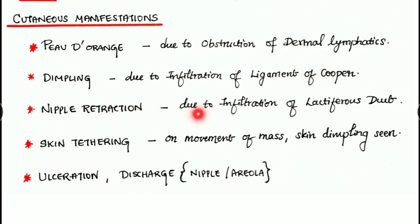Next, nipple retraction - it is due to infiltration of the lactiferous duct. Next, skin tethering: on movement of the mass, the skin dimpling is seen and that is known as tethering. Others are ulcerations, discharge from the nipple or areola, etc.